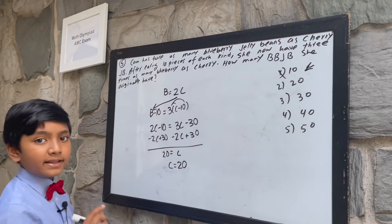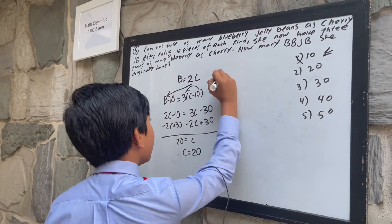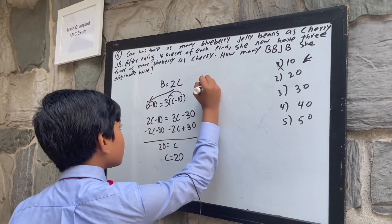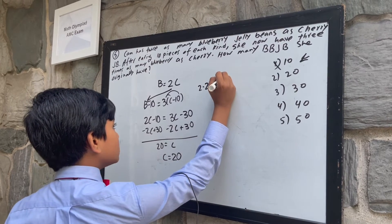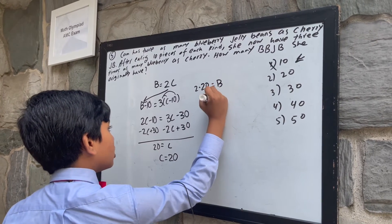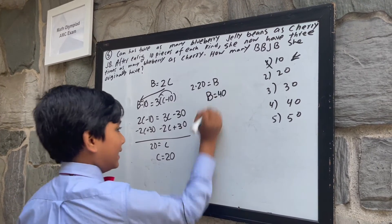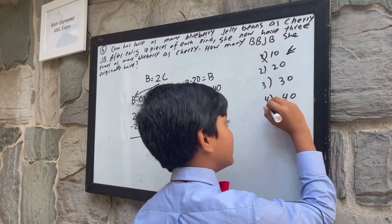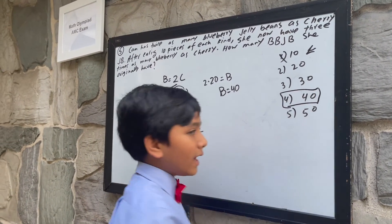She has 20 cherry jelly beans, and thus 2 times 20 equals B, so she has 40 blueberry jelly beans. Thank you everybody for watching.